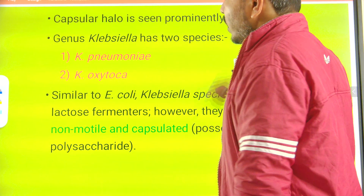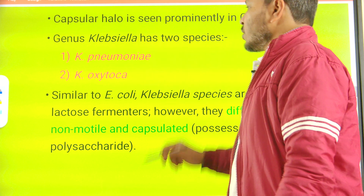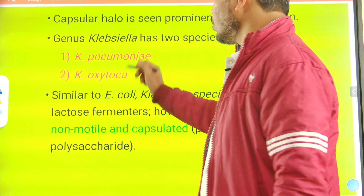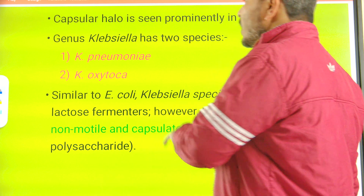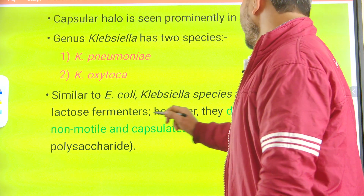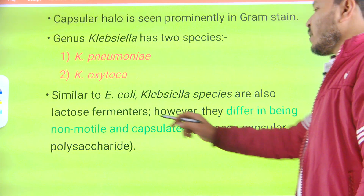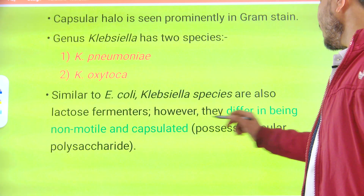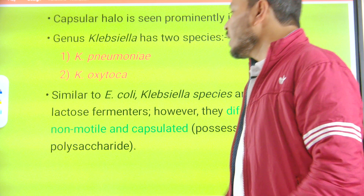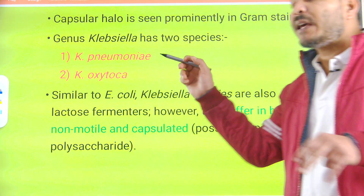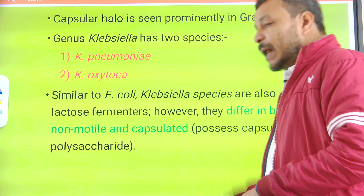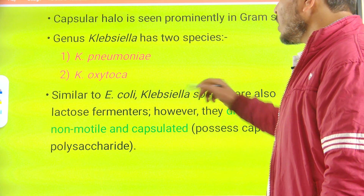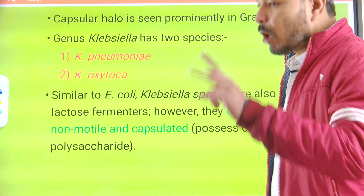The capsule is seen in Gram staining. The genus Klebsiella has two species: Klebsiella pneumoniae and Klebsiella oxytoca. Similar to E. coli, Klebsiella species are also lactose fermenters. However, they differ from E. coli in being non-motile — E. coli is motile because it has flagella, but Klebsiella does not have flagella. They are capsulated and non-motile.